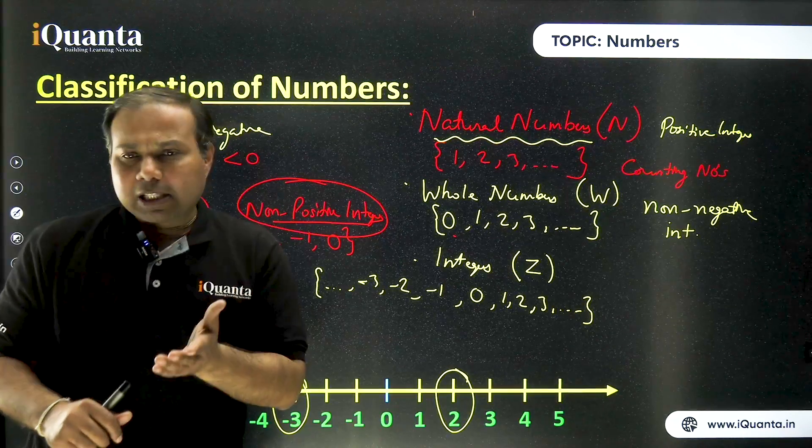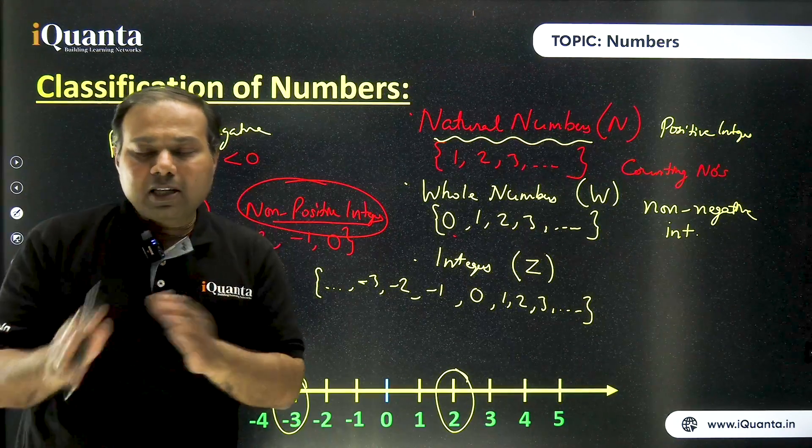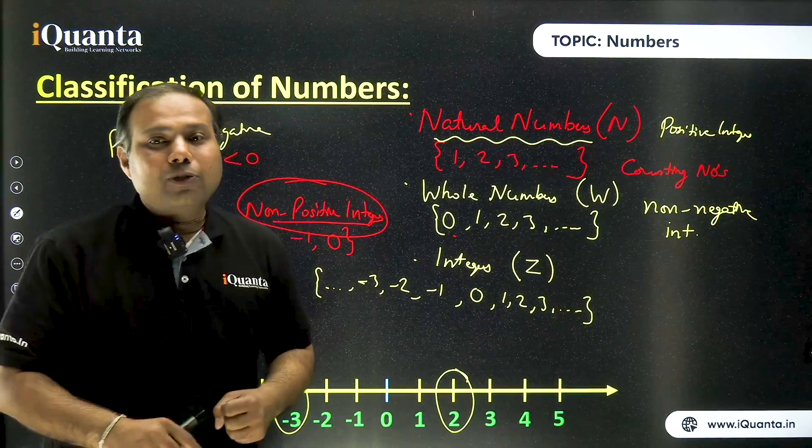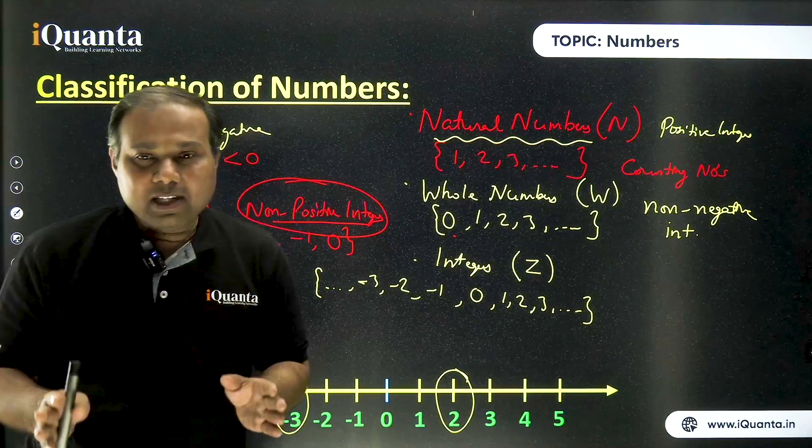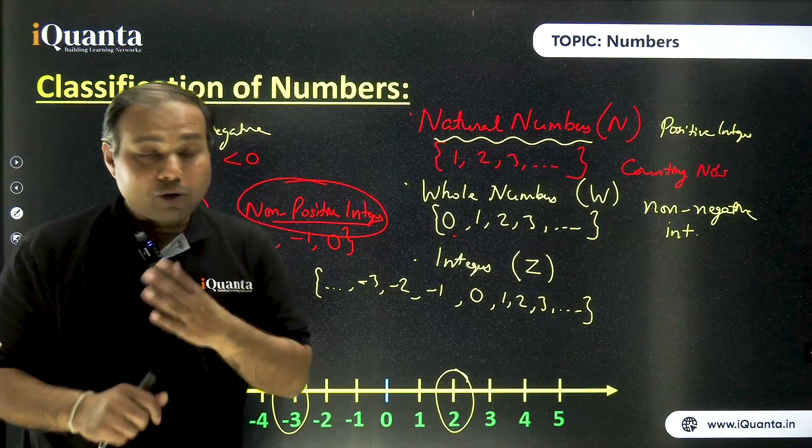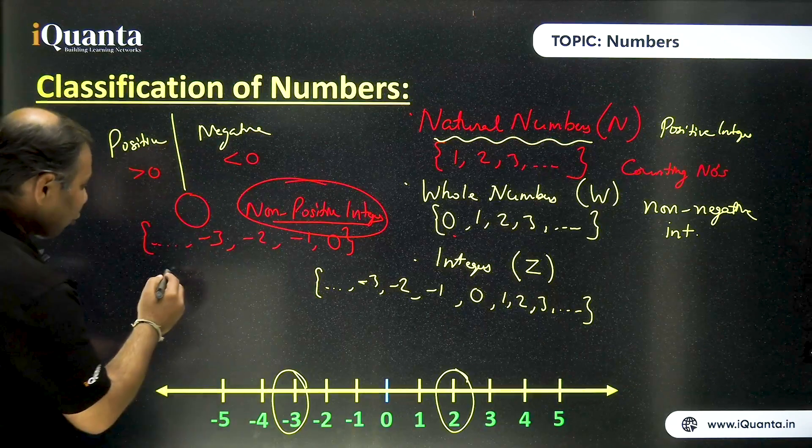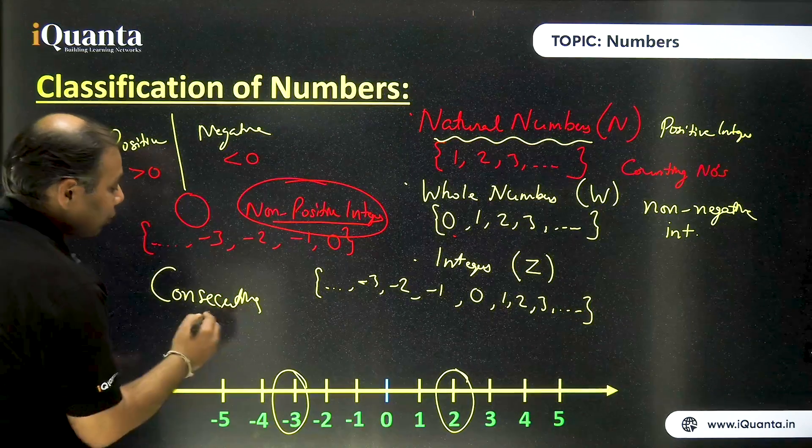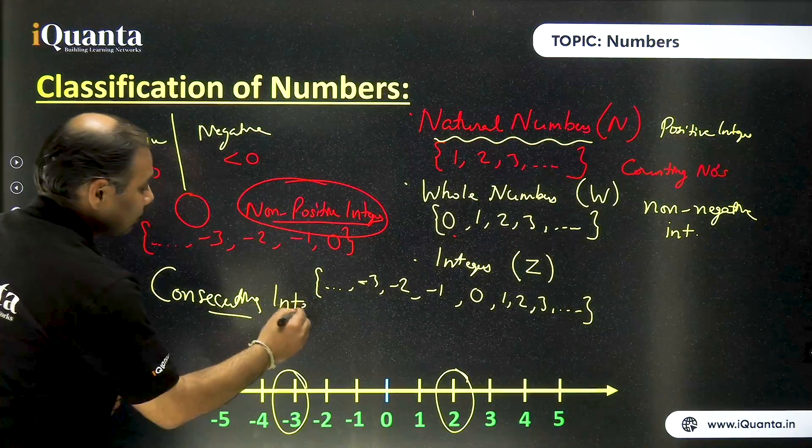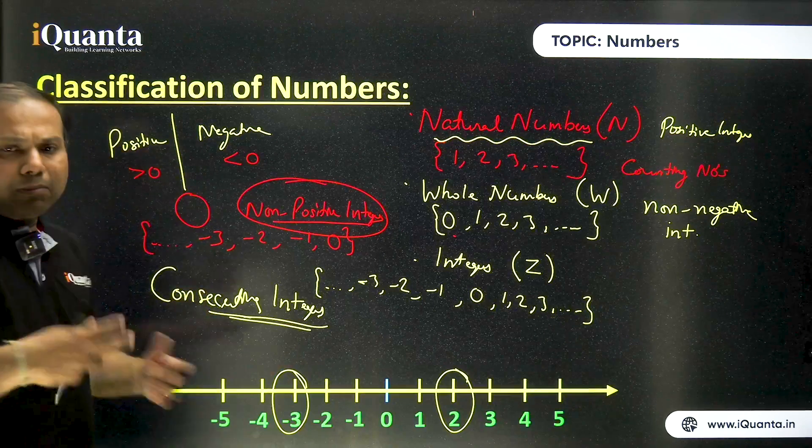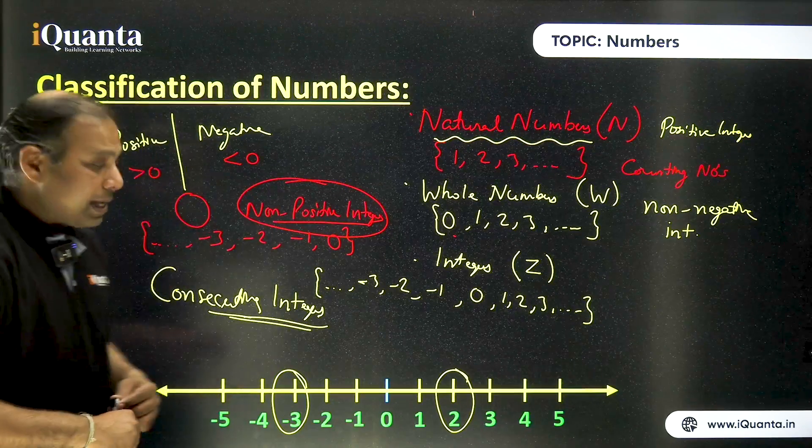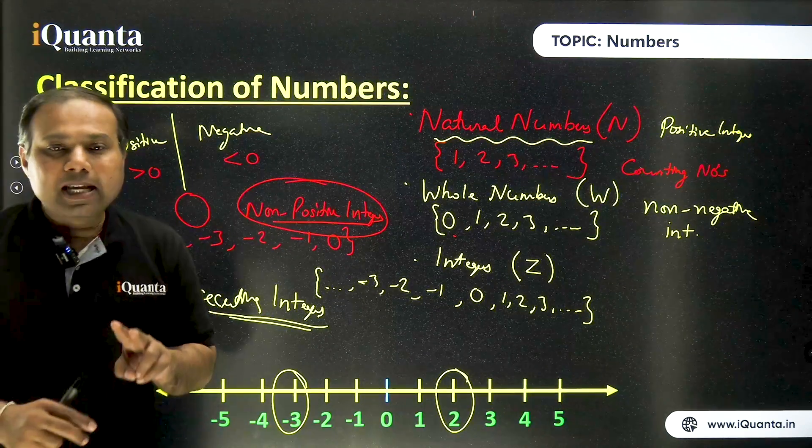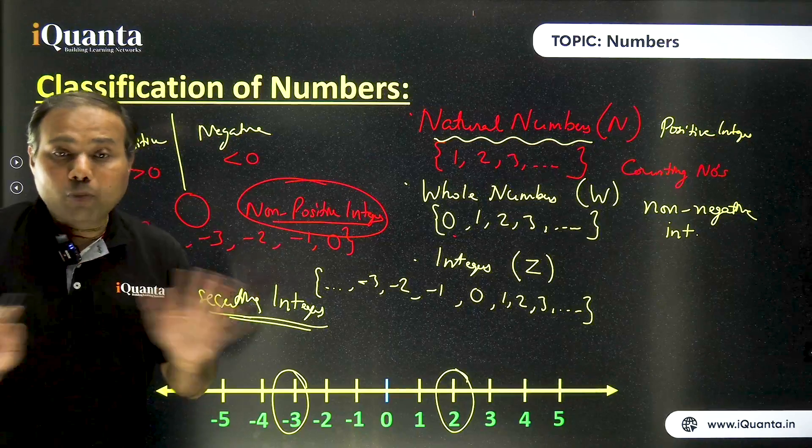Now tell me, is it possible that between any two integers, there is no more integer? What will be the situation? Yes, that is possible. So when there is no integer between any two particular integers, they are known as consecutive integers. So that is also a very important term. And in many questions, we find this term consecutive integers. We will study more about this in further lessons. But for now, we can understand that consecutive integers are two integers in between which there is no more integer.